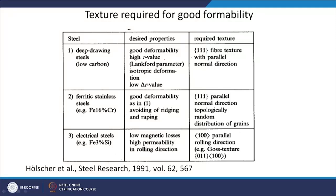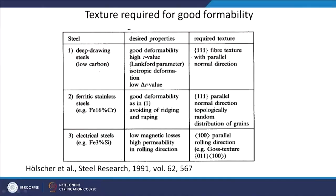What texture is required for this kind of behavior? For deep drawing steel, the desired properties are good deformability with high R value and isotropic deformation with low delta R value. For this you need a 111 fiber texture parallel to the normal direction — as we have already seen with fiber texture, you need a 111 fiber texture.